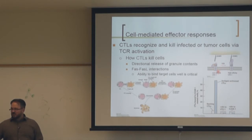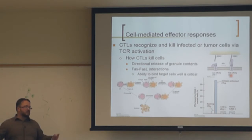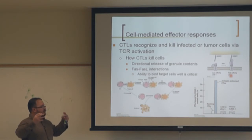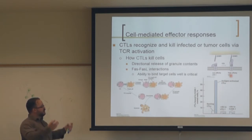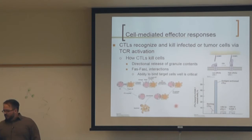Resting T cells have low-affinity LFA-1 that won't bind ICAM. Upon antigen recognition, the TCR signal dramatically increases LFA-1 affinity, causing the CTL to stick tightly to the target cell. This is called the 'kiss of death' — cells stay in close proximity for about five minutes, the CTL releases perforins and granzymes or signals through FAS/FAS ligand, then releases, and the target cell undergoes apoptosis.